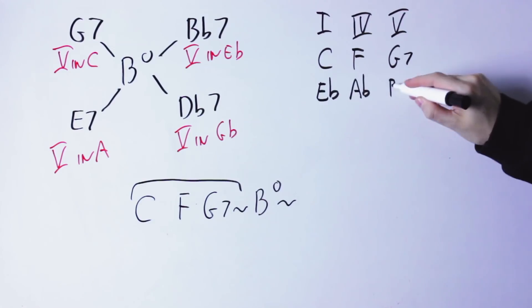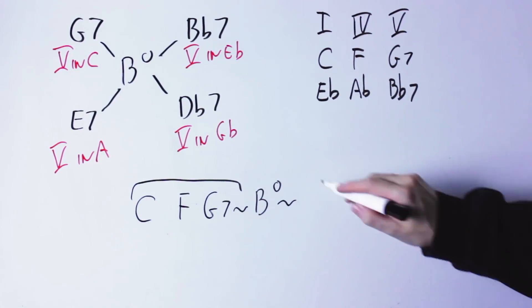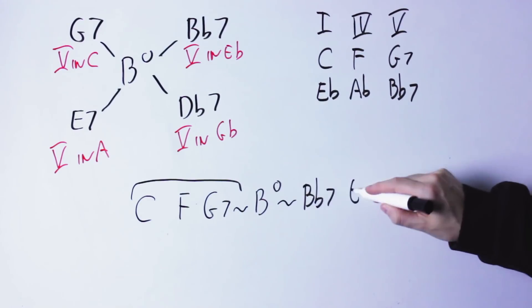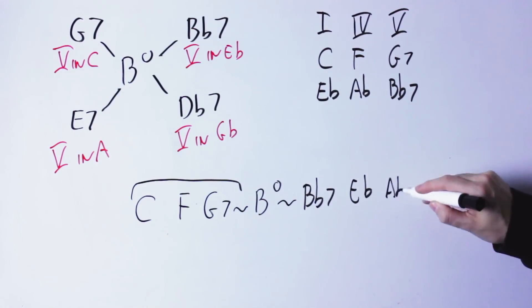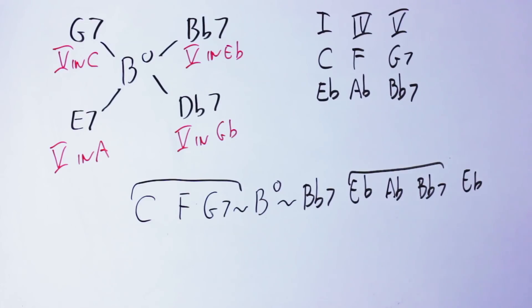And then let's do the same from the key of C to the key of E flat. So I'm going to play C, F, G7, then B diminished, then B flat 7, then E flat, A flat, B flat 7, E flat.